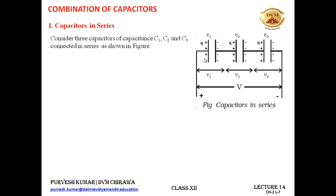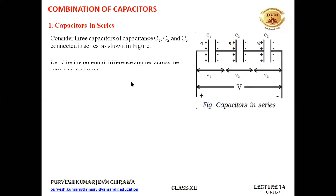Consider three capacitors C1, C2, and C3 connected in series as shown in the figure. C1, C2, and C3 represent the values of their capacitances. V1, V2, and V3 are the respective potential differences across each capacitor, and capital V is the total voltage applied across the combination. In series, the charge on each capacitor remains the same, just as current remains the same in series resistors.